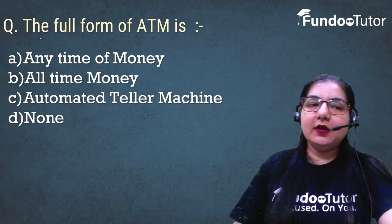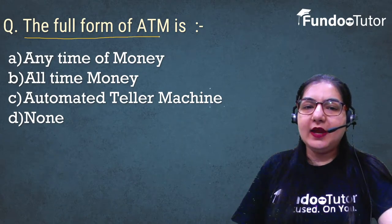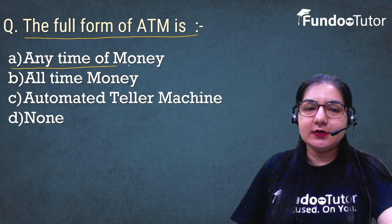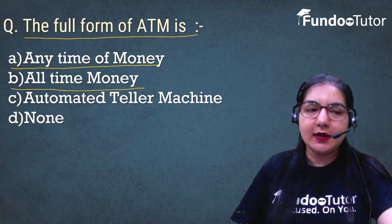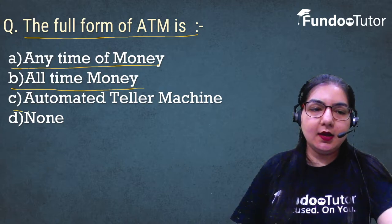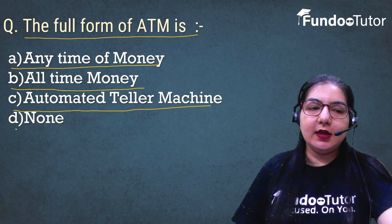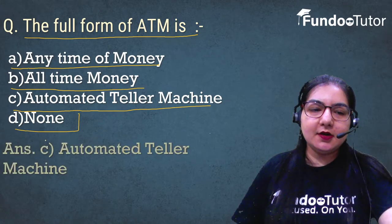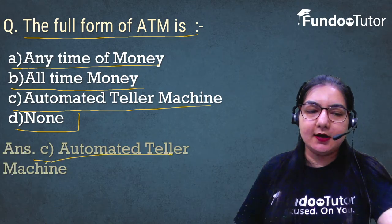The question is: the full form of ATM is — the options are: A. Any time of money, B. All time money, C. Automated teller machine, D. None of these. The answer is C. Automated teller machine.